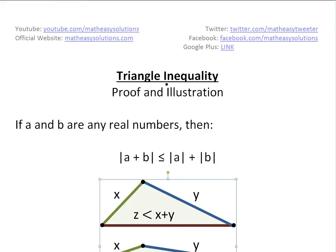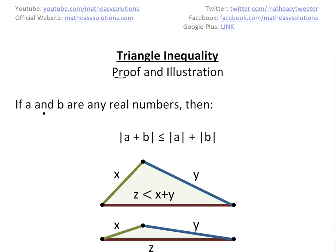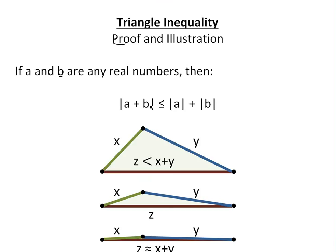Today we're going to discuss basically what the triangle inequality is, and look at a proof and illustration of it. The triangle inequality states that if A and B are real numbers, then the absolute value of A plus B is less than or equal to the absolute value of A plus the absolute value of B.